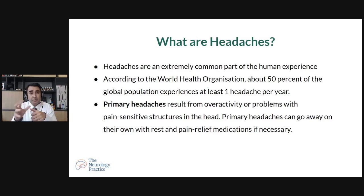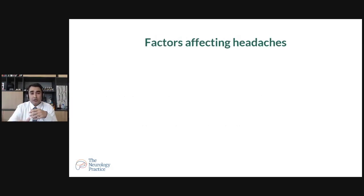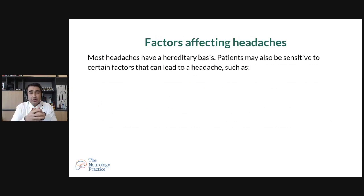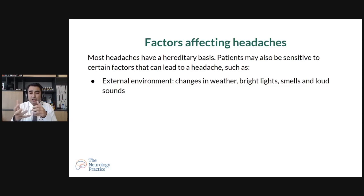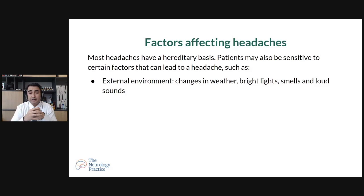Primary headache can go away either by rest or by some painkillers like Panadol or mild stronger painkillers given by GPs. Most headaches have a hereditary basis — there is a genetic predisposition, and it can run in families, such as migraine. Patients may be sensitive to certain factors like environmental factors — change in weather. The hot and humid Singapore weather can sometimes trigger a new attack of migraine. Sometimes bright lights, extreme smells, and loud music can also cause headaches — these are external environmental factors which can precipitate primary headache.